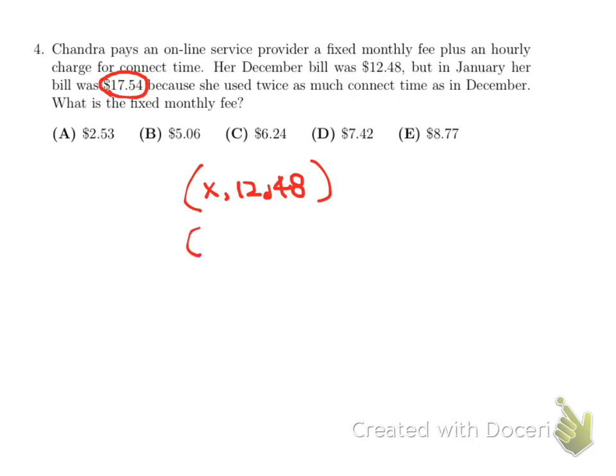And we can assume this one almost as if it is a coordinate. And then, when she used twice as much, then we get 2x must be 17.54. Then, by looking at the comparison, change here is x. x amount of time was responsible for the increase of the fee from 12.48 to 17.54. So then, x must be equal to here, by subtraction, we get 5.06.